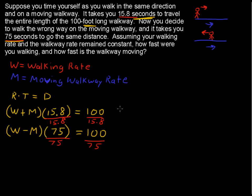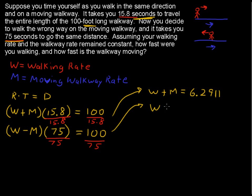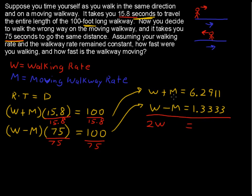That gives us two simplified equations: W plus M equals 6.2911, and W minus M equals 1.3333 repeating. If we add those two equations, the M and negative M cancel out, leaving us with 2W equals 7.6244.